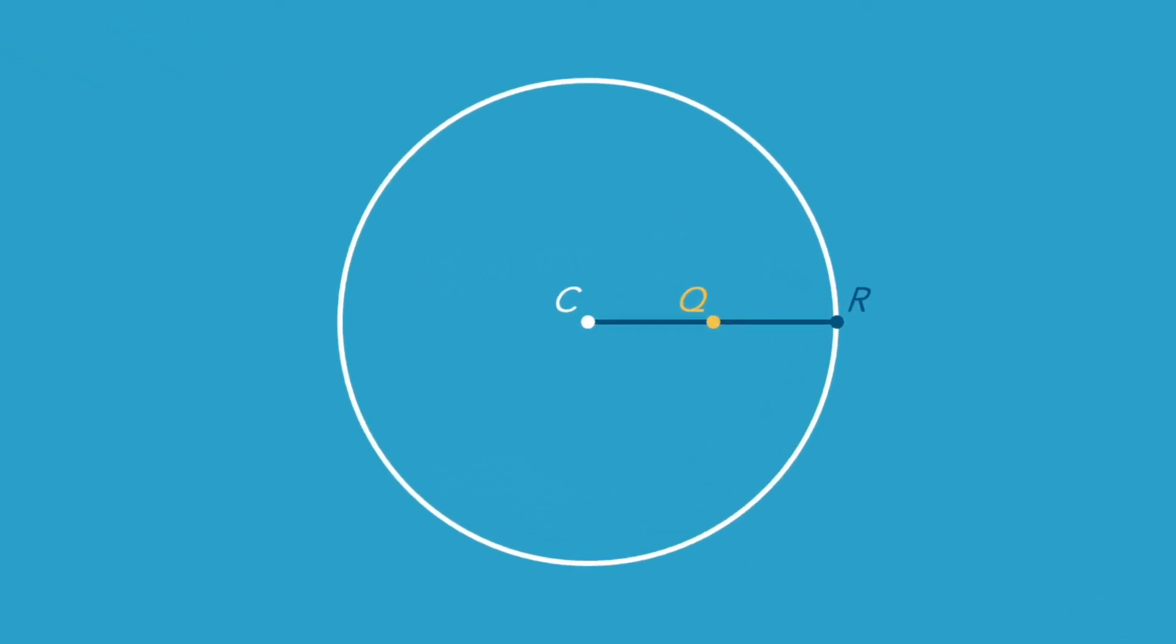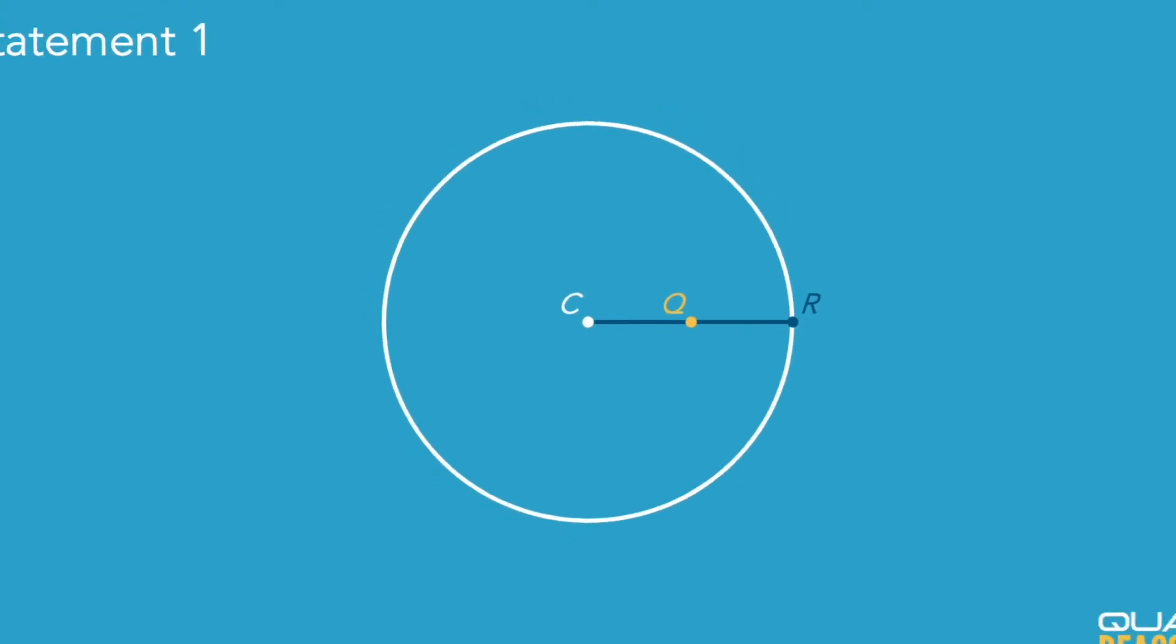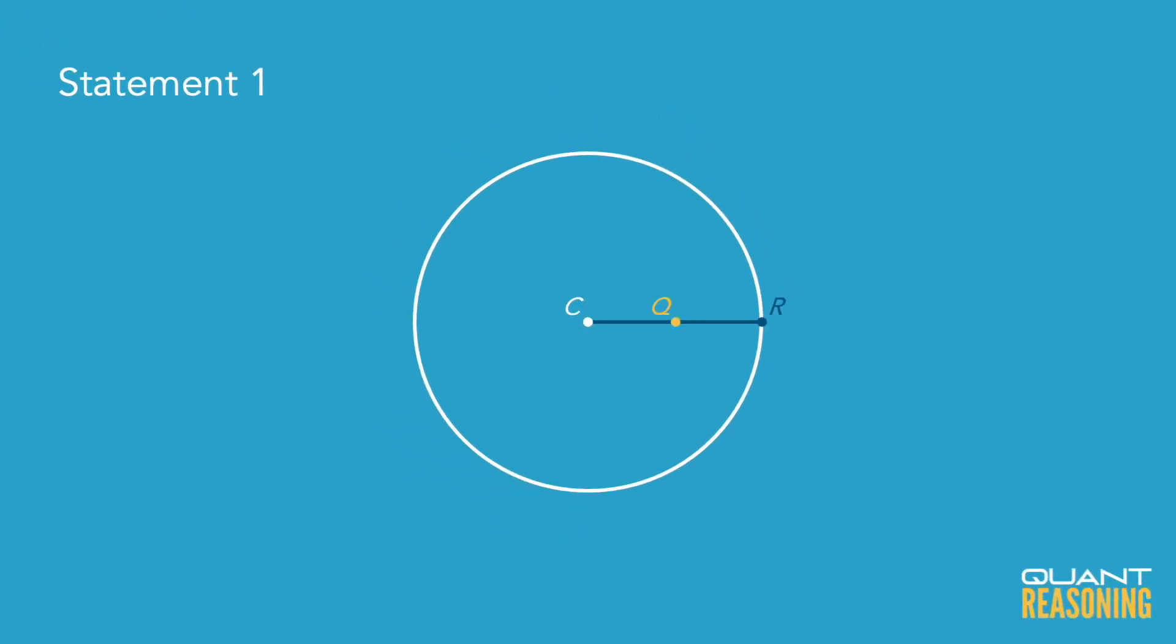In other words, Q is at the midpoint between R and C if there were a straight line connecting R and C. Now we're told that R is a point on the circle, so the straight line connecting R and C would be the radius.